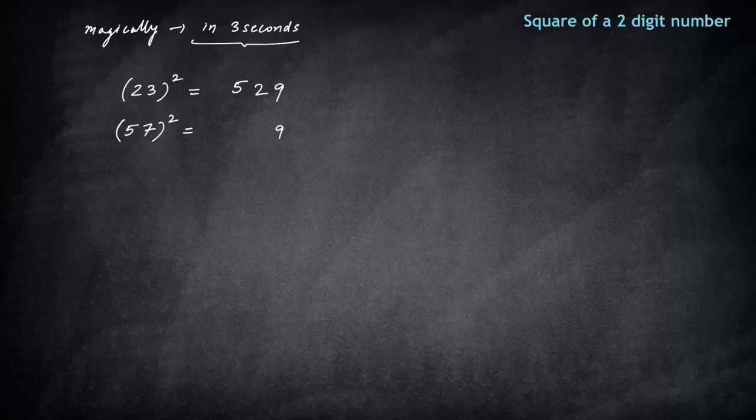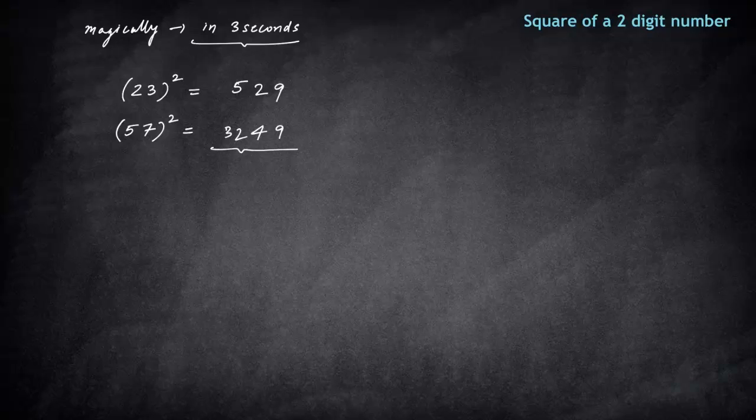hundreds and thousands if there is any. Nine, then four, then you will just write 32. So this is the square of 57. You must be surprised at how we have done this. Nothing much.